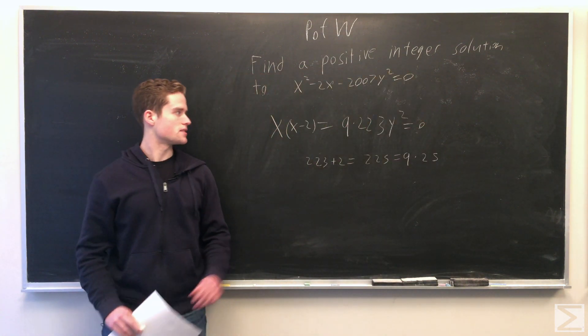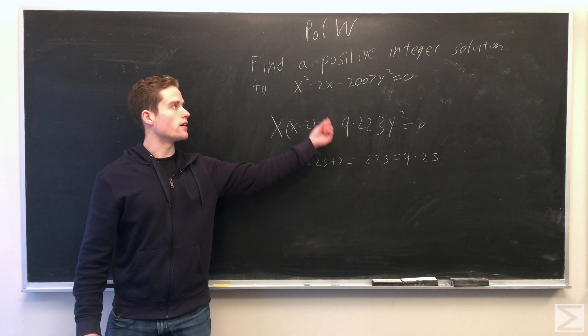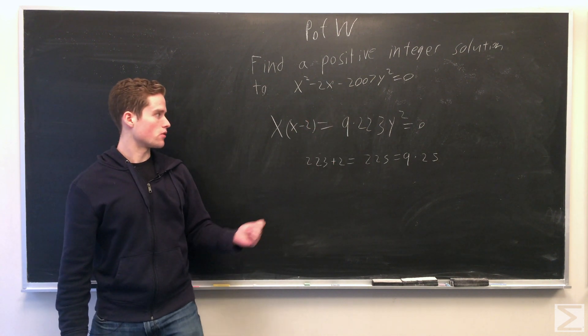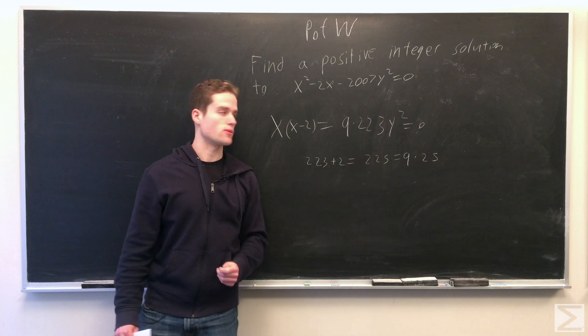Instead, we're going to write it as x times x minus 2 equals 9 times 223 times y squared. 2007 factors into 9 times 223. Now note 223 plus 2 is 225, which is 9 times 25, and 25 is 5 squared.